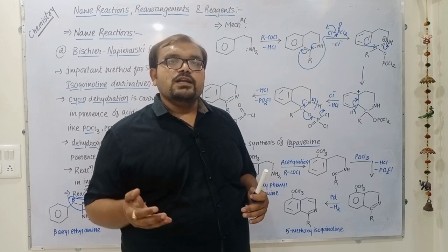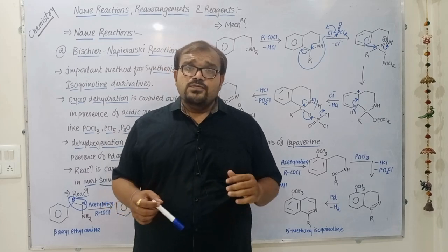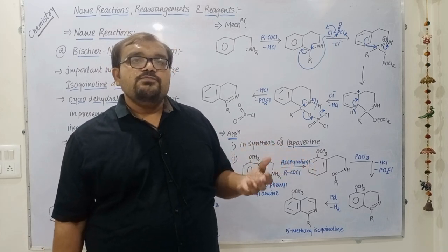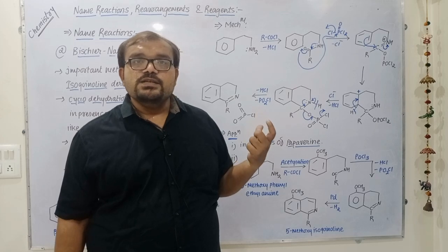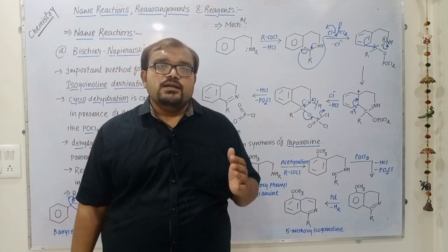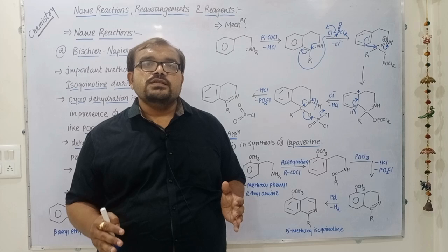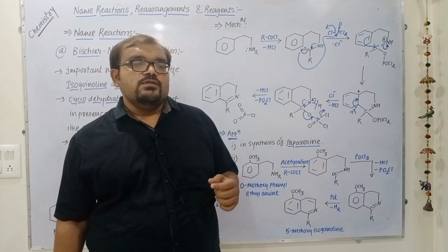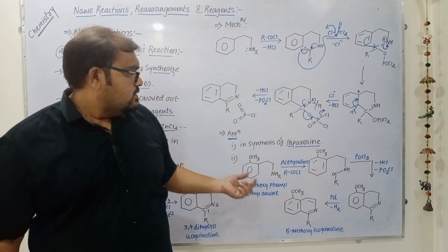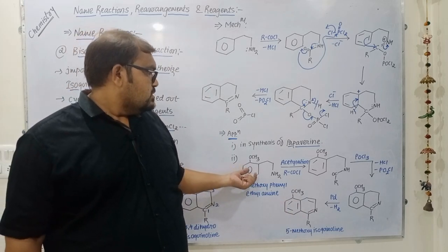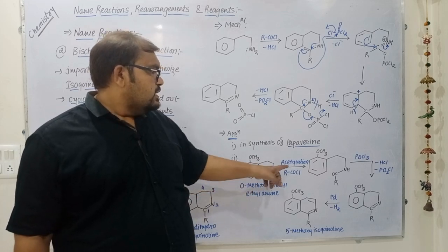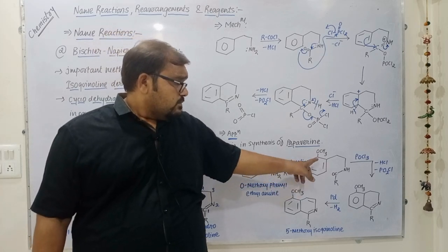The 3,4-dihydroisoquinoline derivative, upon dehydrogenation in the presence of palladium or selenium metal, is converted into the isoquinoline derivative. The application of this reaction helps us understand Bischler-Napieralski further. One important application is that it is an important method for the synthesis of the terpenoid alkaloid papaverine.